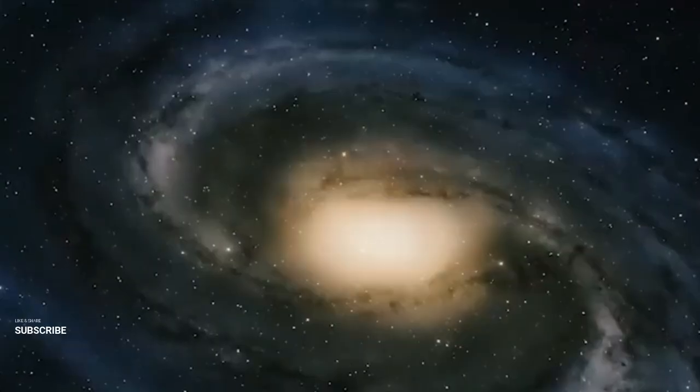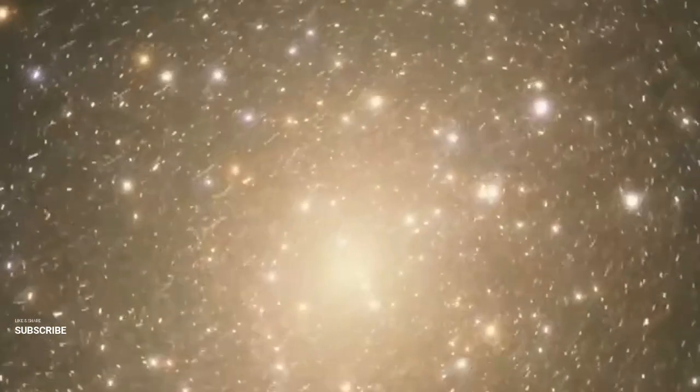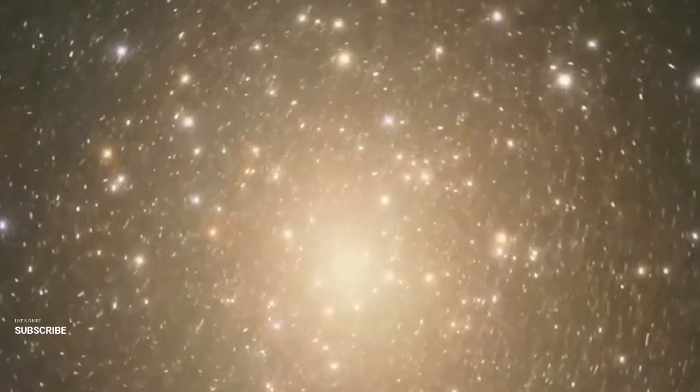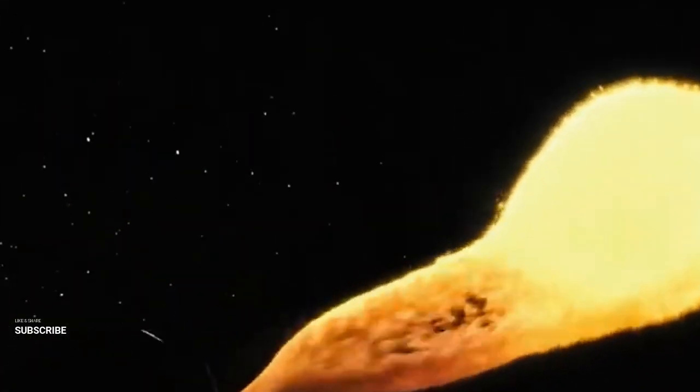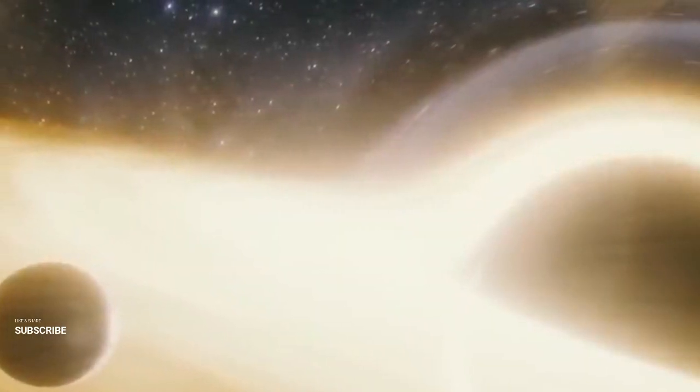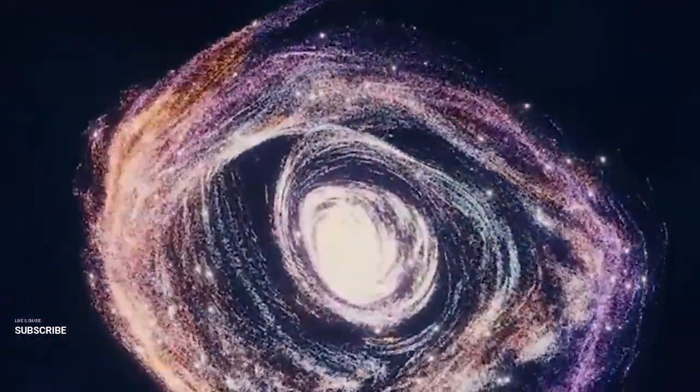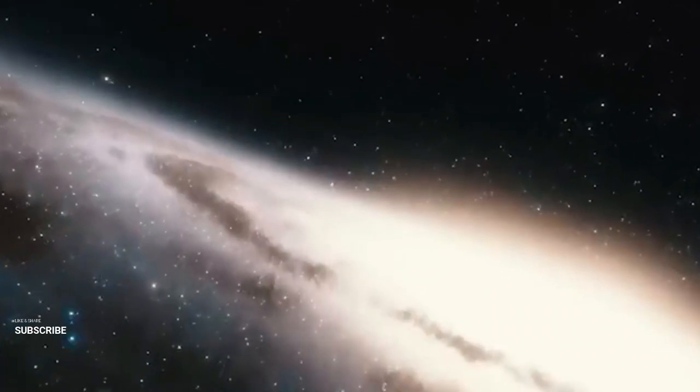However, this finding poses a conundrum. If these events transpired only 570 million years after the Big Bang, then the progenitor stars of this black hole must have been significantly older. According to current astronomical theories, the earliest stars are believed to have had relatively brief lifespans. For instance, blue supergiants may have exhausted their fuel within a few hundred thousand to a million years. Yet, this timeline doesn't fully account for the formation of such a massive black hole, deepening the mystery and challenging our understanding of early cosmic events.